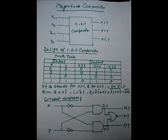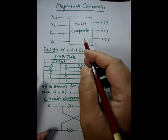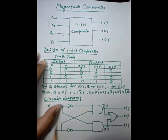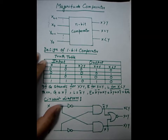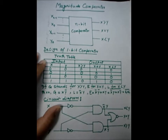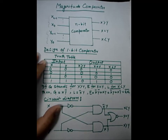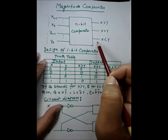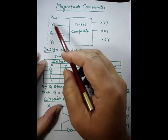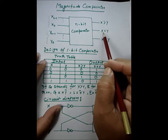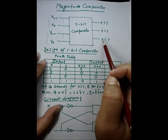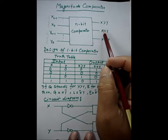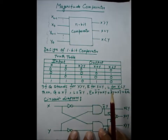We will discuss the magnitude comparator. Looking at the block diagram, we have drawn an n-bit magnitude comparator. From x0 to x(n-1), there are n bits being compared to y0 to y(n-1), another n bits. If X is greater, that output becomes high and the remaining two become low. If the two binary numbers are equal, the X-equal-to-Y output becomes high. If X is less than Y, that output becomes high. This is the magnitude comparator — we are comparing the magnitudes of two binary numbers.